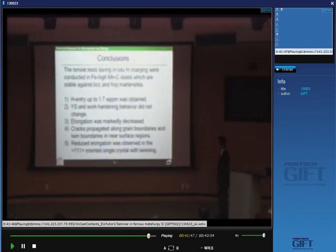Conclusion. Tensile tests during in-situ hydrogen charging were conducted in high manganese carbon steels, which are stable against BCC and HCP martensite. Hydrogen entry up to 1.7 weight ppm was obtained. Second, the strength and work-hardened behavior didn't change. Third, elongation was markedly decreased. Fourth, cracks propagated along grain boundaries and twin boundaries in near surface regions. Fifth, reduced elongation was observed in 111 oriented single crystal with twinning.